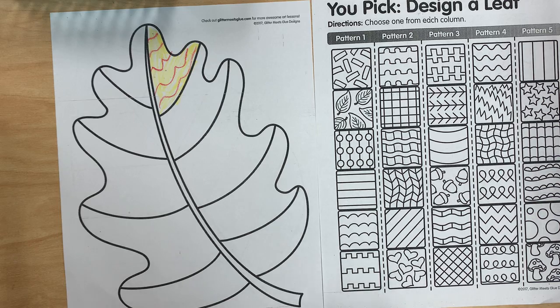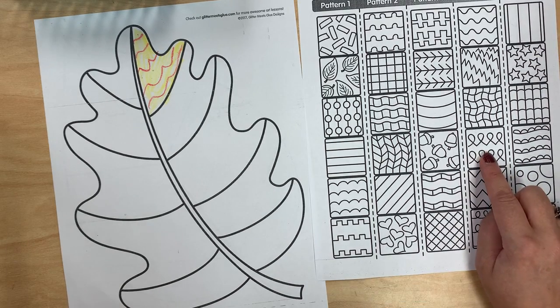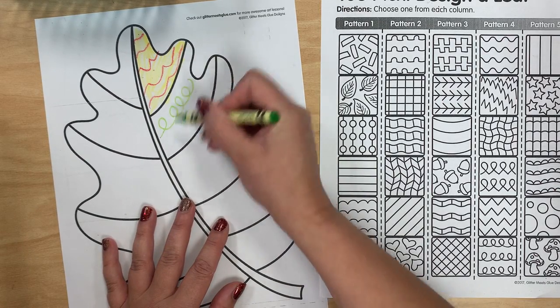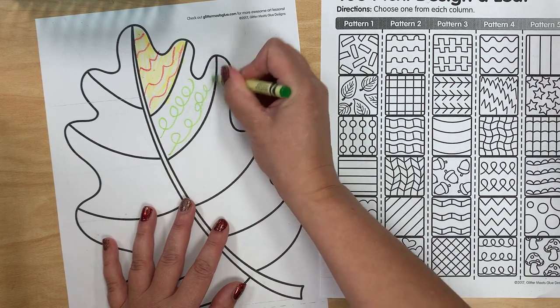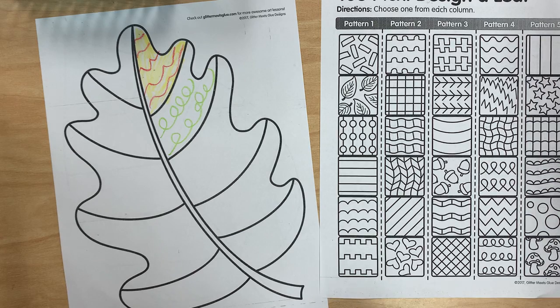For my second section I might pick these loop-de-loop lines and once again I'm going to pick a color to color the background in with.